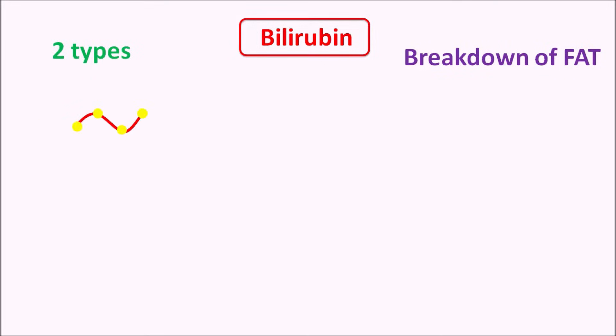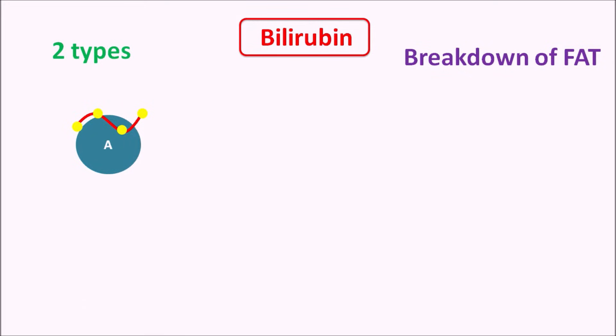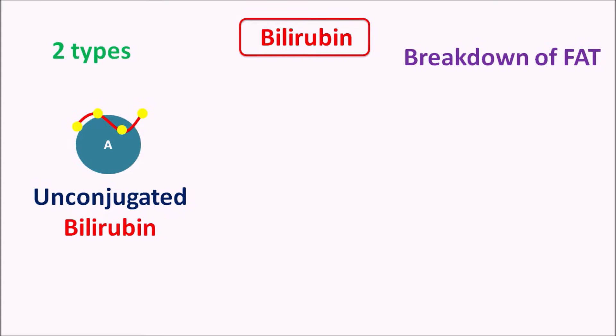What is bilirubin? Bilirubin is a brownish yellow pigment that is required for breakdown of the fat present in food. For digestion of fat, bilirubin is secreted through the bile. Bilirubin within the body can exist in two types. One type is present as free form within the blood, associated with albumin, and is called unconjugated bilirubin. This unconjugated bilirubin is water insoluble, so it is not directly involved in digestion of fat — that is why it is called indirect bilirubin.